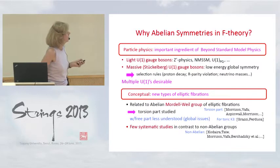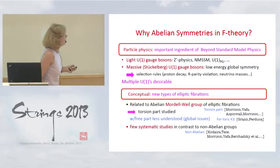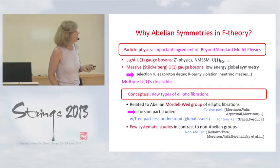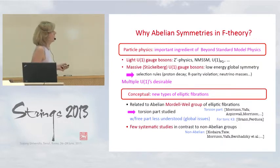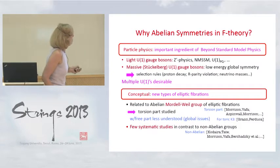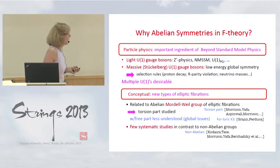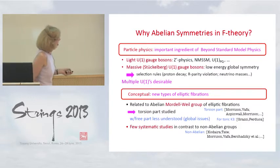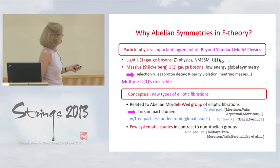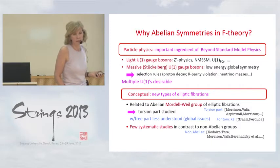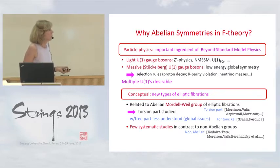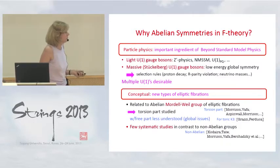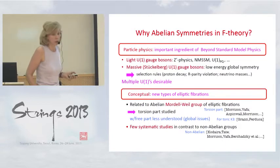There is also conceptual interest in studying abelian symmetries, because it leads to new types of elliptic fibrations in F-theory compactification, which are related to the so-called Mordell-Weil group of elliptic fibrations, whose torsion part has been studied in the past. However, the free part associated with the abelian U1 symmetries is less understood, and very few systematic studies have been done on additional U1 factors, in contrast to the extensive literature on non-abelian gauge symmetries.